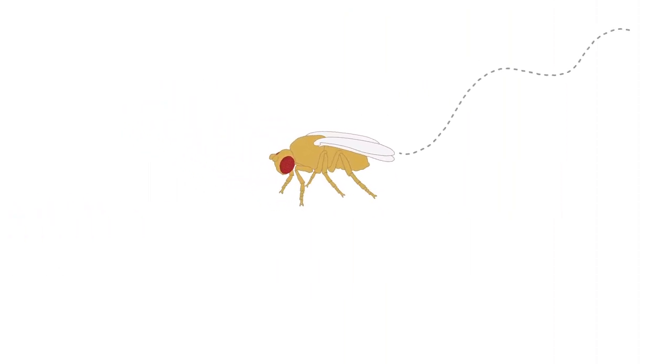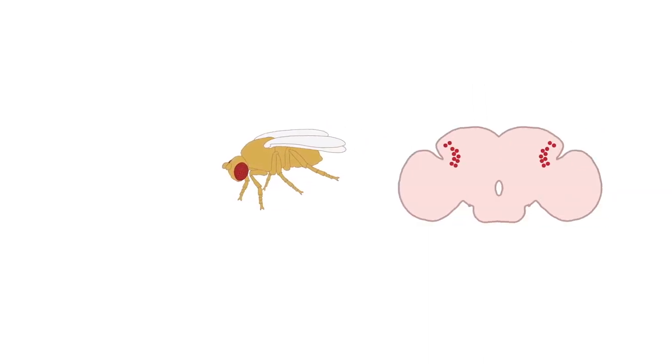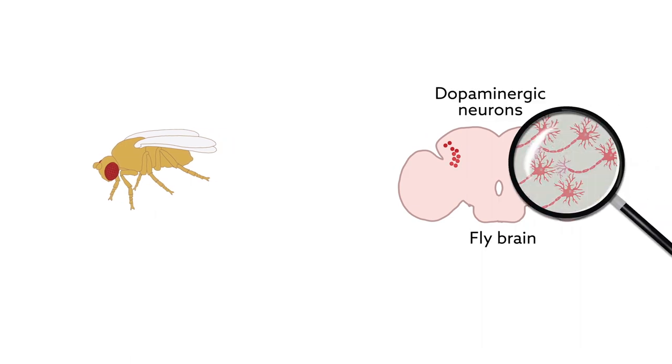Much like Parkinson's patients, flies with either mutation move more slowly and have weakened muscles. The insects struggle to fly and they lose dopaminergic neurons in their brains, a classic feature of Parkinson's.